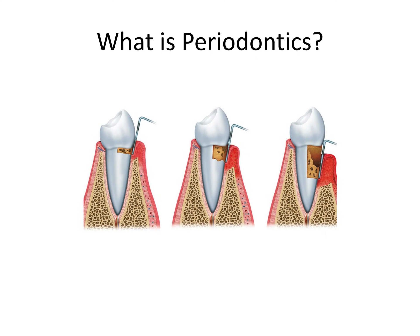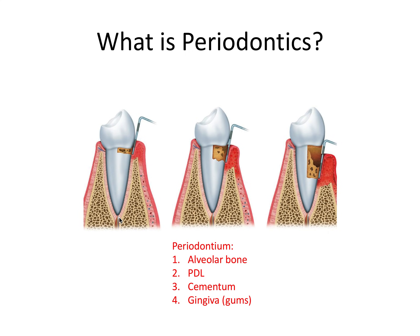So what is periodontics? Periodontics is the branch of dentistry concerned with the periodontium, which refers to the hard and soft tissues that surround and support the tooth, including the alveolar bone, the PDL or the periodontal ligament, the cementum, and the gingiva.